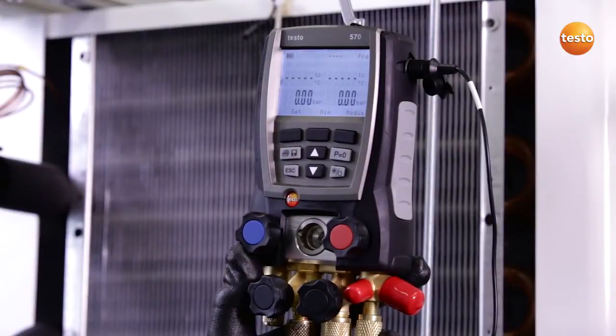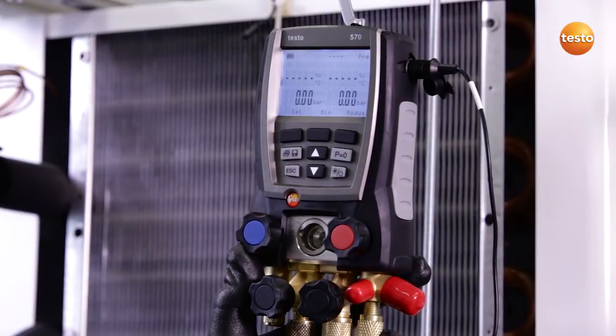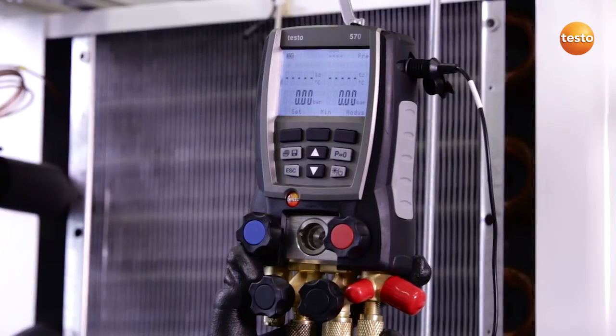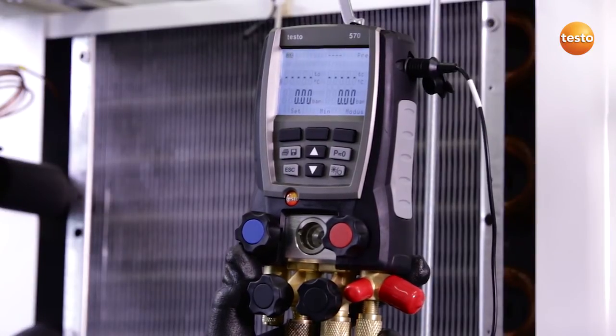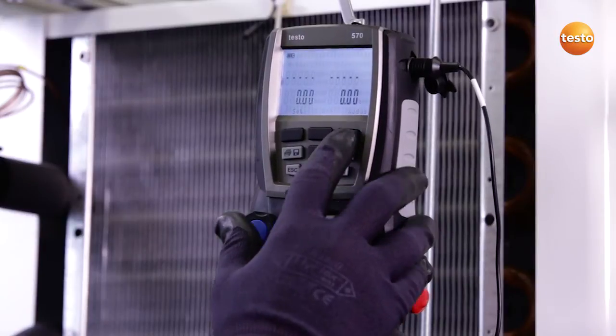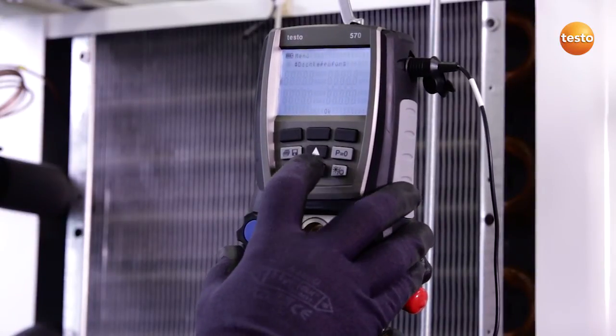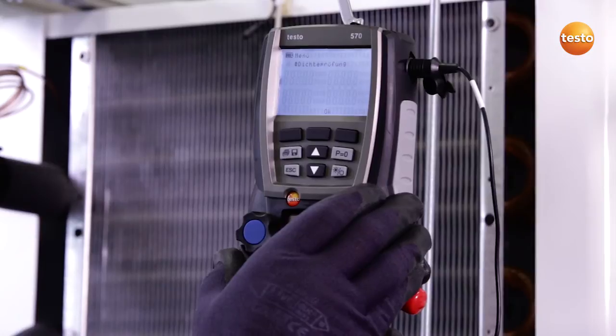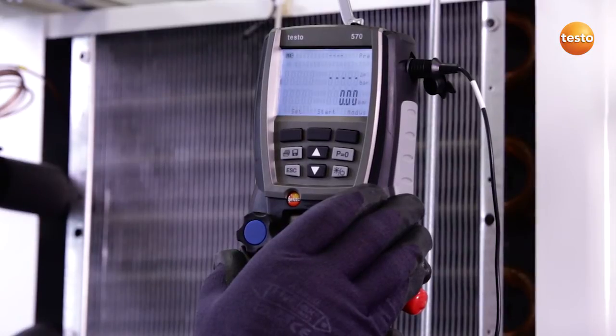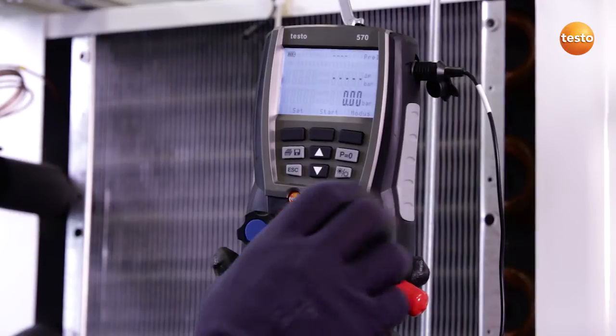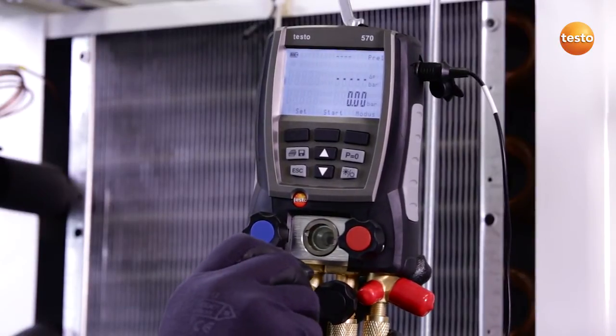According to the specification plate on the plant, the maximum positive operating pressure is 6 bar. In order to ensure these 6 bar, I will now switch the instrument mode over to tightness test and release the pressure to the system.